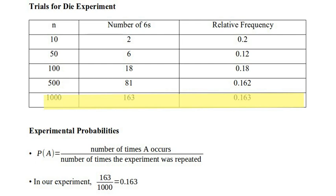Now, a different set of experiments would have different numbers of sixes and different relative frequencies. There's nothing special about these numbers in their exactness. What's more interesting about these numbers is they are tending towards a particular value. And we'll talk about that in a second.